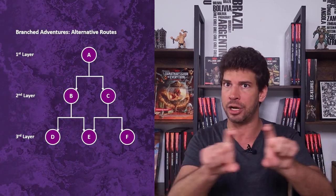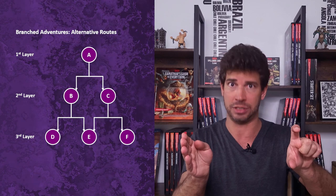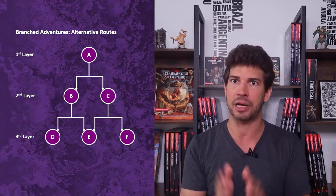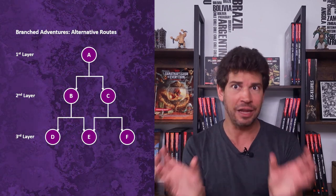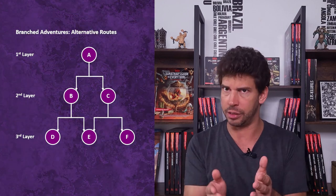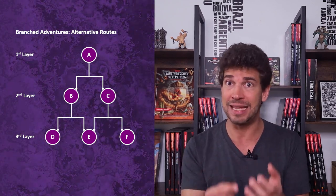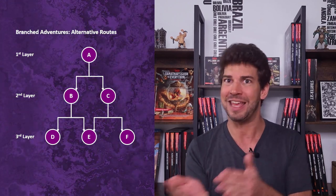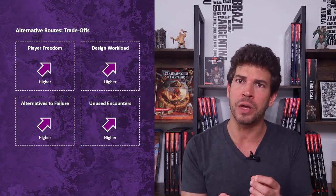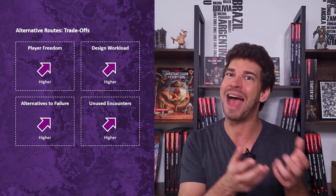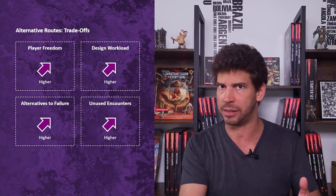Branched adventures can also offer players alternative routes. In that case, a first-layer encounter unlocks two or more second-layer encounters. Players can choose which of the second-layer encounters to tackle, and they need to succeed in only one to unlock one or more of the following third-layer encounters. Each second-layer encounter may unlock the same third-layer encounter, different third-layer encounters, or a mix of them. For instance, encounter A unlocks encounters B and C in the second layer, but encounter B unlocks encounters D and E, while encounter C unlocks encounters E and F. Such adventures provide greater freedom and alternative routes that players may take if they happen to fail in one of them — but as always, the trade-off is a higher burden for the DM in the form of design complexity and unused work.